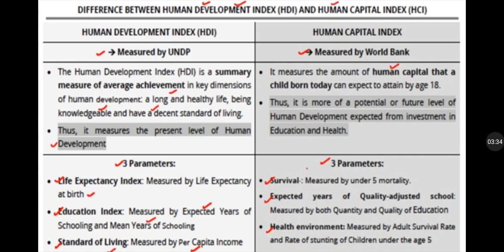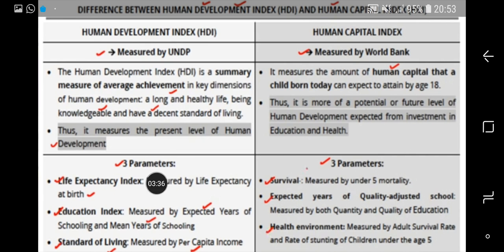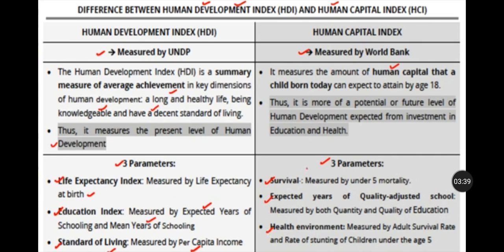The three parameters of HDI are: first, the Life Expectancy Index — life expectancy at birth; second, the Education Index — which measures expected years of schooling and mean years of schooling; and third, Standard of Living — measured by per capita income (GNI per capita).